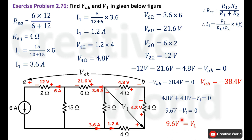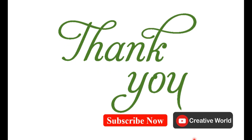So the value of VAB in this network is minus 38.4 Volt and V1 is 9.6 Volt. This was exercise problem number 2.76. Thank you, see you again in the next video.